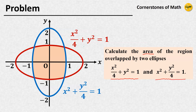The first ellipse has a semi-major axis of 2 along the x-axis and semi-minor axis 1 along the y-axis. For the second one, the ellipse is congruent to the first one, but the semi-major axis is now along the y-axis.